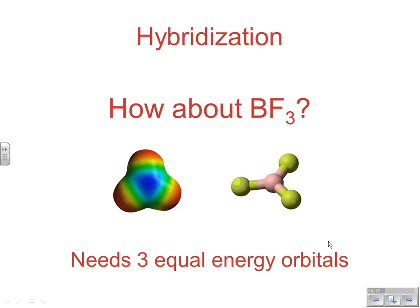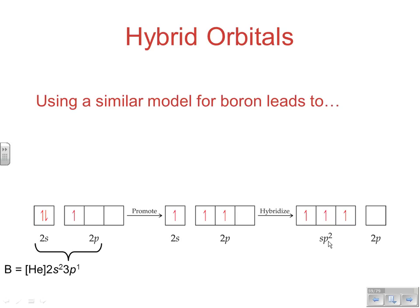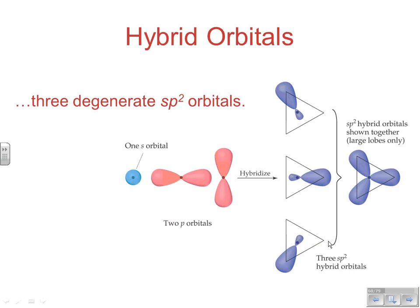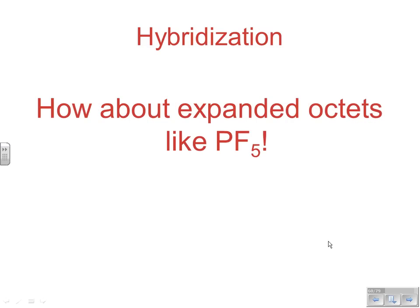Boron trifluoride needs three single bonds, so we need three equal-energy orbitals. Promoting one 2s electron to a 2p gives three electrons for bonding. These hybridize as 1s and 2p's — called sp² hybridization. The three equal-energy electron domains in sp² hybridization repel each other to 120 degrees, which is exactly the trigonal planar geometry we expect for BF₃.